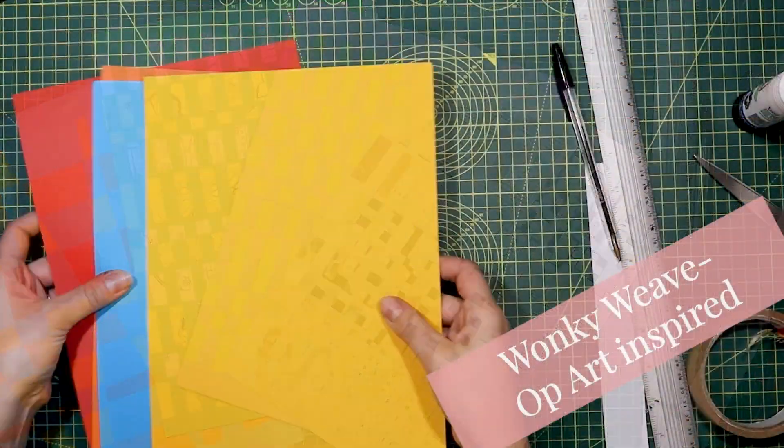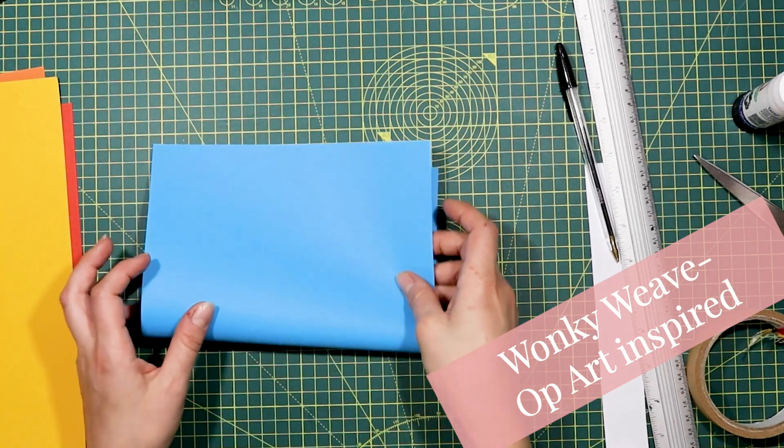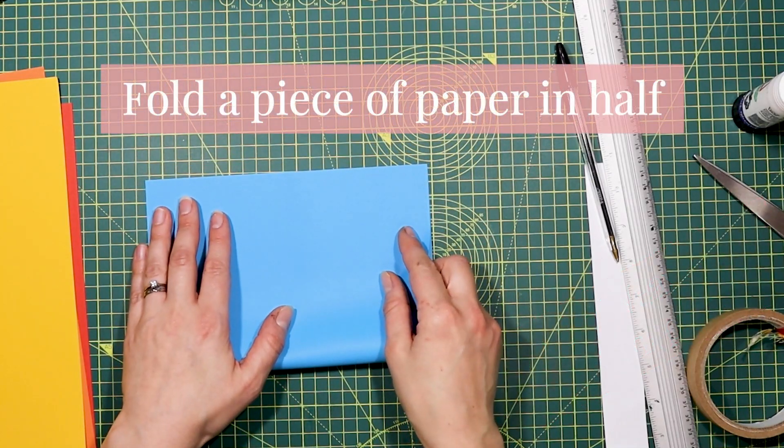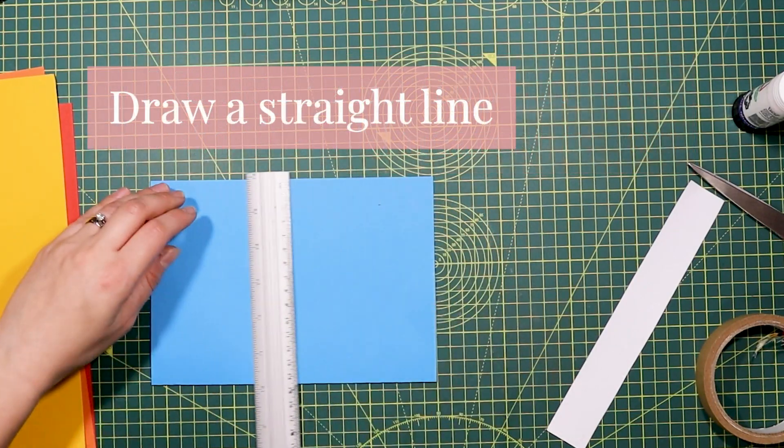We'll start with the wonky weave which is inspired by op art, and I've got four sheets of coloured paper. First, fold your piece of paper in half with the fold facing towards you. Then measure two centimetres from the top and draw a straight line.